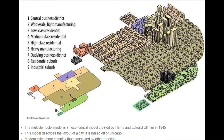Hello friends, today we are going to discuss the Multi Nuclei Model in urban and regional planning. This model consists of different nuclei, representing concentrations of activities like central business district, wholesale, light manufacturing, low-class residential, medium-class residential, high-class residential, heavy manufacturing, outlying business district, residential suburb, and industrial suburb. The multiple nuclei model is an economic model created by Harris and Edward Ullmann in 1945, describing the layout of a city based on a study of Chicago.